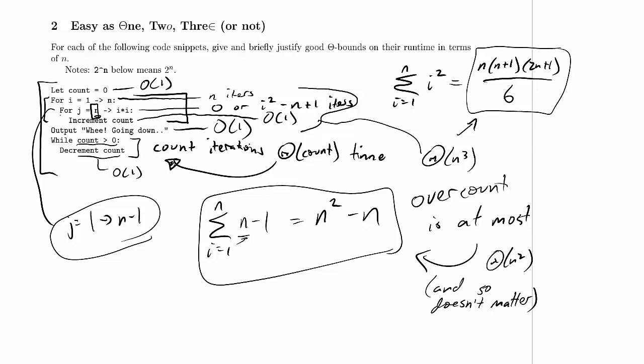But here's the cool thing, we incremented count once each time through this loop, so how big is count? Well, asymptotically, it's theta n cubed. We don't need to calculate exactly how big it is, because as long as it's theta n cubed, we know that this loop also takes theta n cubed time.